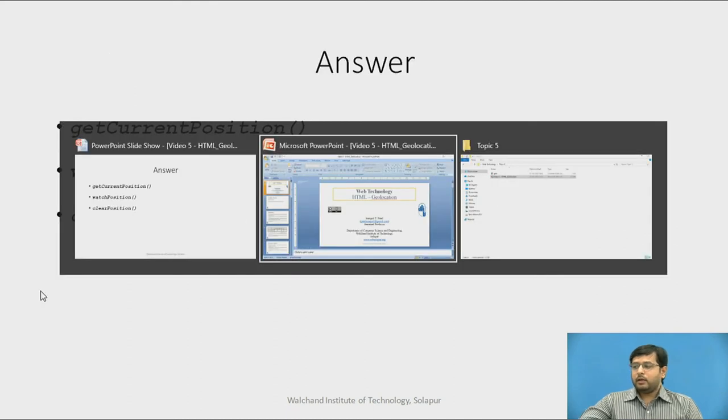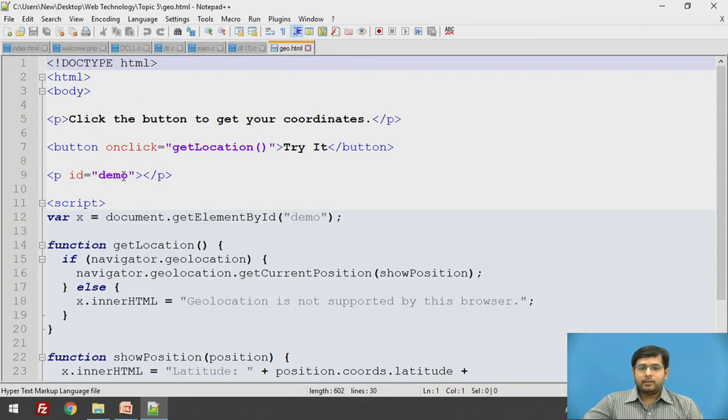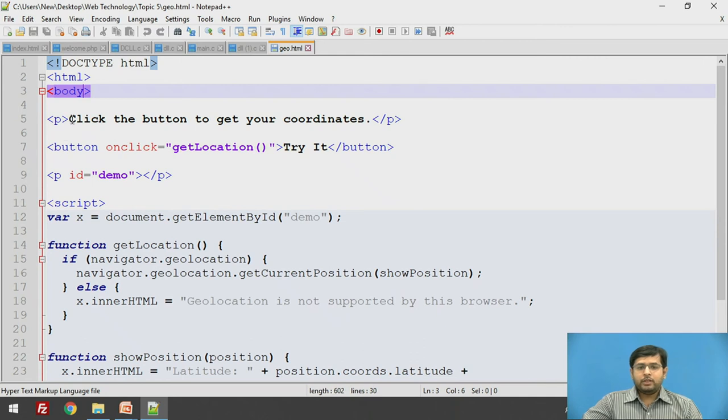Let's see a program of geolocation. Geolocation should be written in a JavaScript. This is the HTML page that we have created to retrieve the geolocation of our page or rather of the user. Here we have given the HTML and body. We are just displaying that click the button to get the coordinates and on click we are calling the function get location which has been written in JavaScript. And we are displaying the coordinates in the p tag.